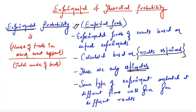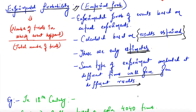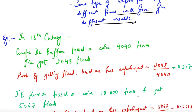These are estimates because if you do an experiment ten times and then do the same experiment a hundred or ten thousand times, every time your experimental probability will be different. Same type of experiment conducted at different times will give you different results.